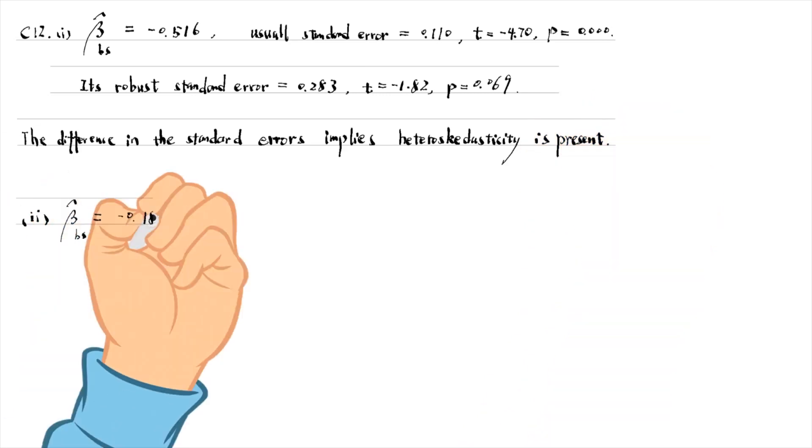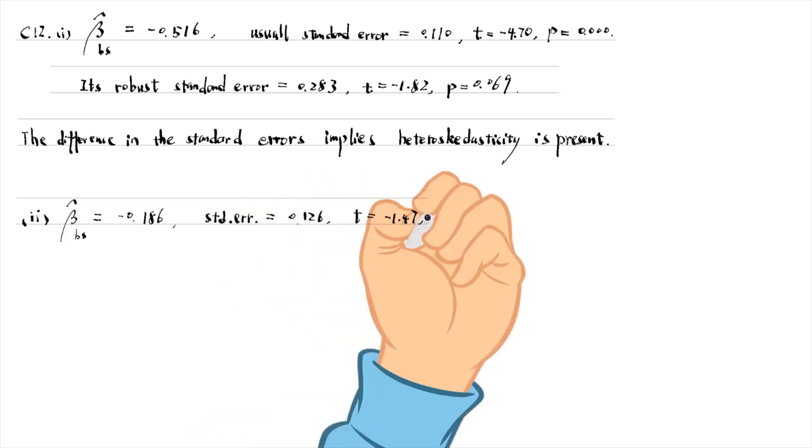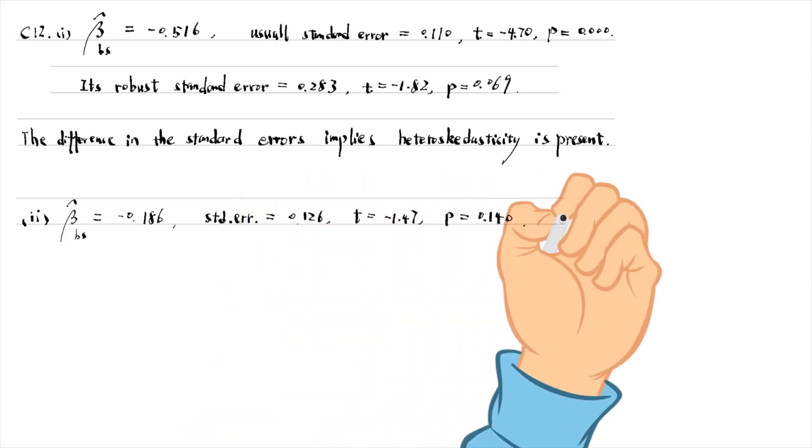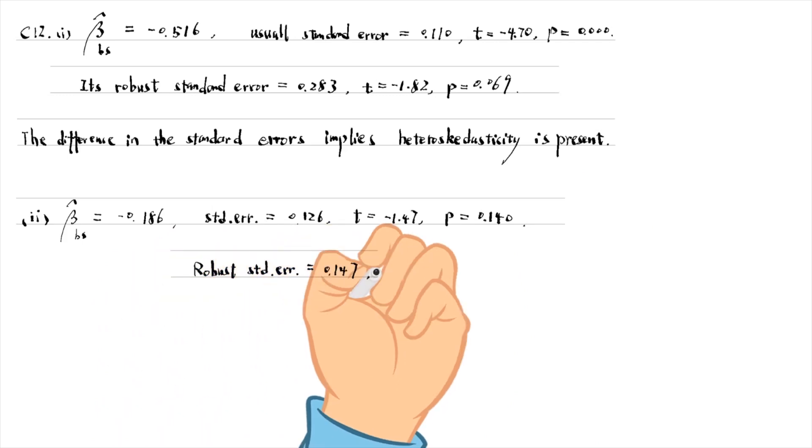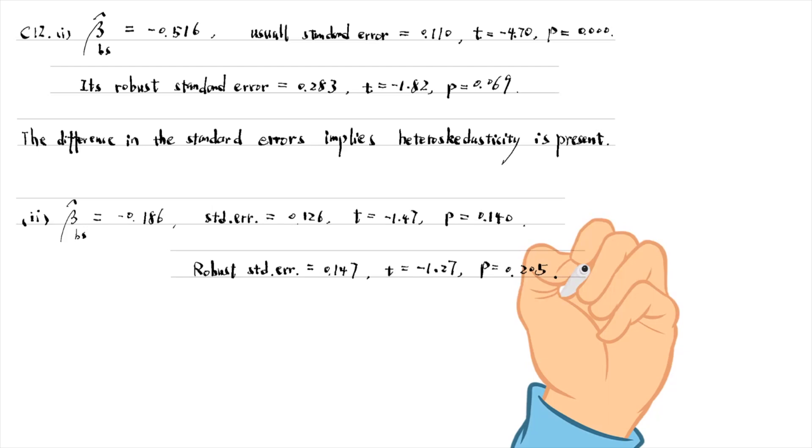In part 2, after dropping the four observations with BS larger than 0.5, the coefficient on BS becomes minus 0.186. The standard error is 0.126. The t-statistic is minus 1.47, and its p-value is 0.140. The robust standard error is also larger, 0.147, leading to a higher p-value of 0.205.